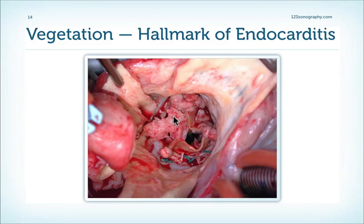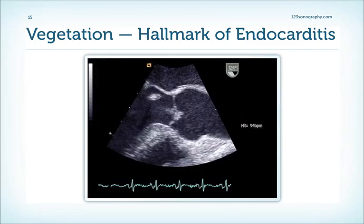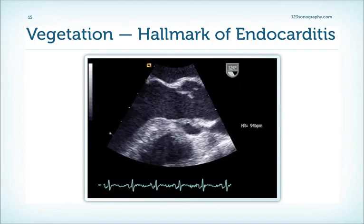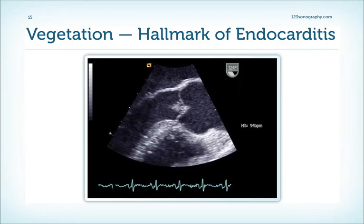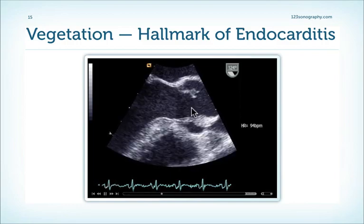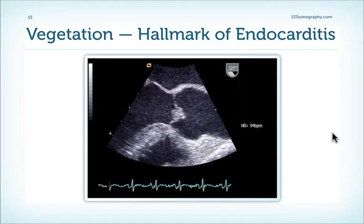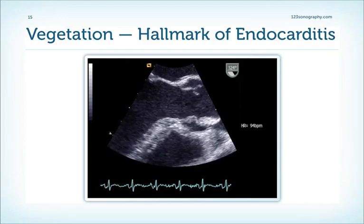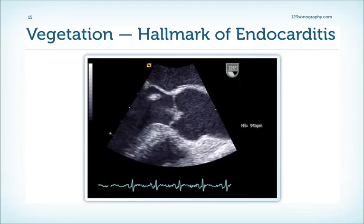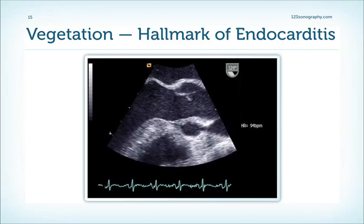The hallmark of endocarditis is the vegetation. Here is an example of vegetations seen on an aortic bioprosthetic valve in a patient being operated — we can see not only one but multiple vegetations. And this is how a vegetation would be seen with echocardiography: a mobile structure on the aortic valve which moves back and forth between the aorta and the ventricle. Note that the structure is jelly-like and has a soft appearance — a sign that it is fresh endocarditis.